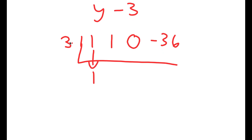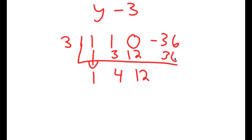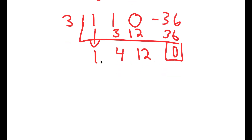So now we're going to drop down 1. 3 times 1 is 3. 1 plus 3 is 4. 3 times 4 is 12. 0 plus 12 is 12. 3 times 12 is 36. Negative 36 plus 36 is 0. So I have a remainder of 0, and these are going to be my coefficients for my resulting polynomial.